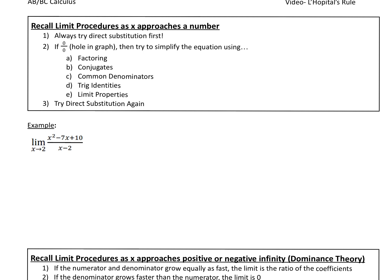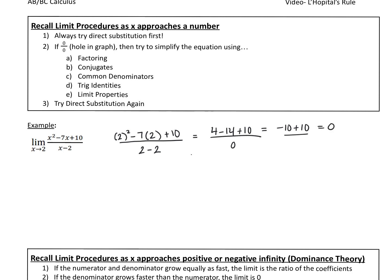The first thing we're always going to try is direct substitution. As x approaches 2, we plug in 2. So 2 squared minus 7 times 2 plus 10, all over 2 minus 2. The top gives us 4 minus 14 plus 10, which is negative 10 plus 10, which is 0. And the bottom, 2 minus 2 is also 0. So we've got 0 over 0, which is a hole. I think we can factor because it looks like a polynomial.